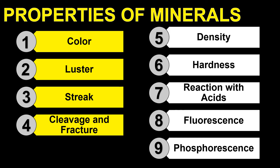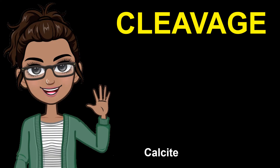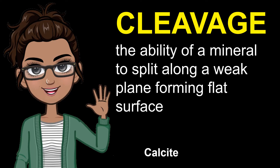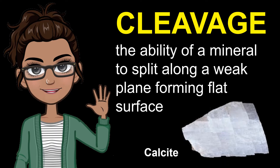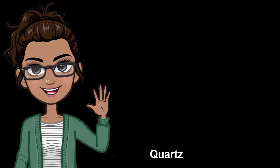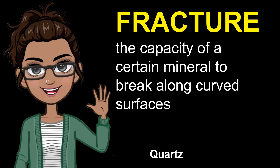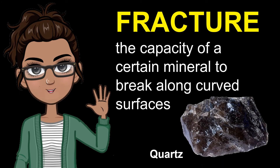Let's move on to the fourth property of mineral: cleavage and fracture. Cleavage refers to the ability of a mineral to split along a weak plane forming a flat surface. Calcite is an example of a mineral that has cleavage in three directions. On the other hand, fracture refers to the capacity of a certain mineral to break along curved surfaces. Quartz is an example of a mineral that has fracture.